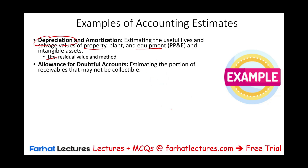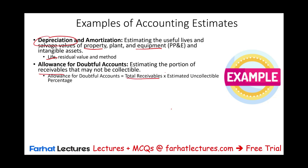When we compute the allowance for doubtful accounts, we are estimating the amount of receivables that we will not collect. We look at receivables times some percentage — that's one approach. We estimate how much we are not going to collect, and based on that we determine bad debt expense, the allowance account, and the net receivable. It affects many accounts.